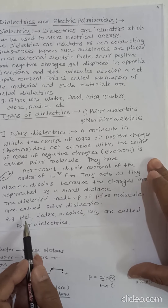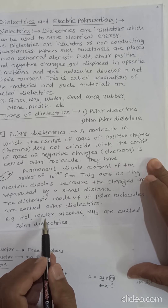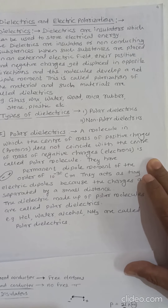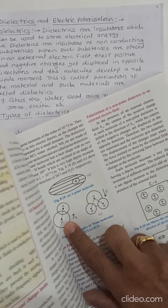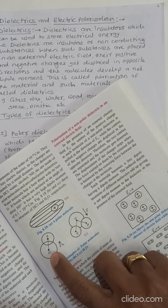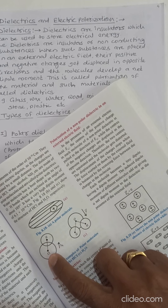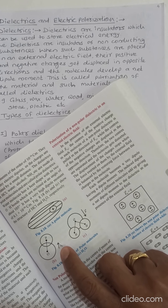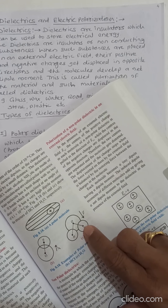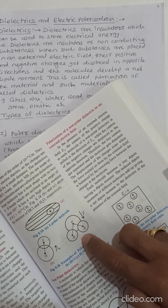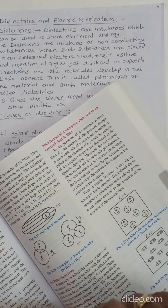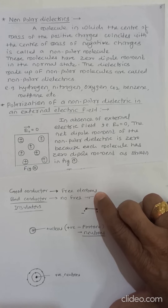Examples of polar dielectrics are HCl, water, alcohol, and NH3. This figure shows the polar molecules. HCl has an asymmetric structure where the dipole moment is directed from chlorine to hydrogen. In the case of H2O, the dipole moment is directed from O to H — this is the asymmetric nature of polar dielectrics.